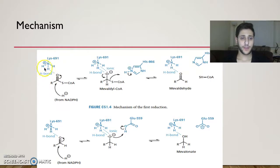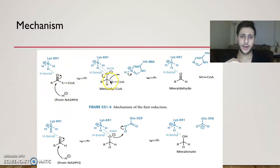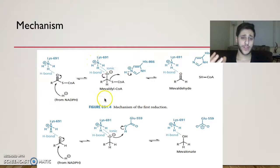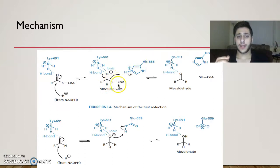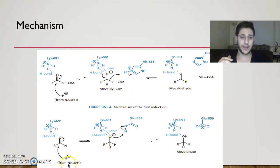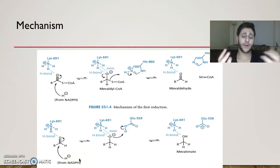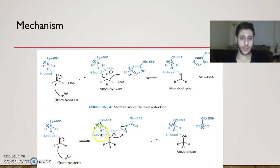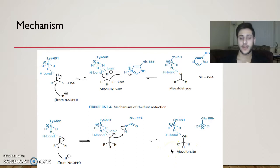Here we have a hydrogen bond stabilizing HMG-CoA. A hydride attacks the carbon, and we also have an ionic interaction by the lysine 691 residue. A hydrogen from histidine A66 kicks out the CoA part as a leaving group, giving us mevalonate. This is the first part; then we have a second part with another NADPH — another hydride ion works with different amino acid residues to produce mevalonate. Mevalonate then undergoes subsequent reactions to make cholesterol.